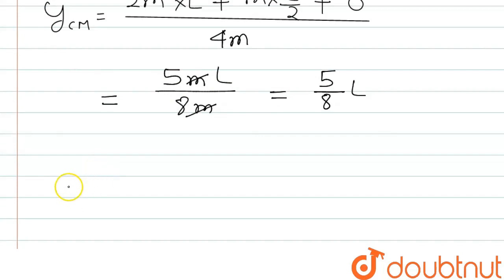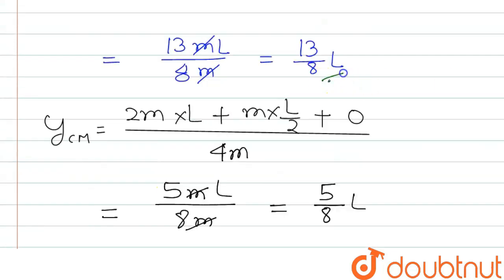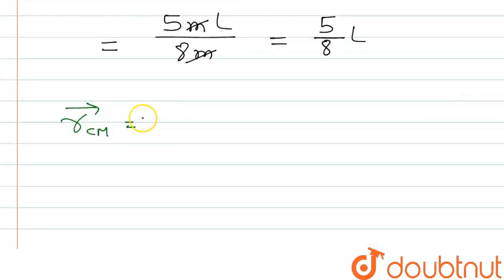So we can write the position vector r of center of mass equal to the x component, which was 13 by 8L, so we can write 13 by 8L x cap, plus the y component, which is 5 by 8L y cap.